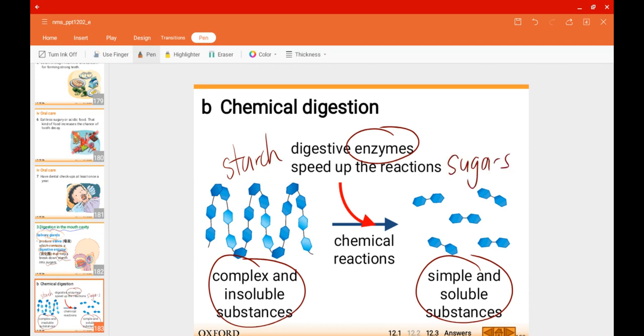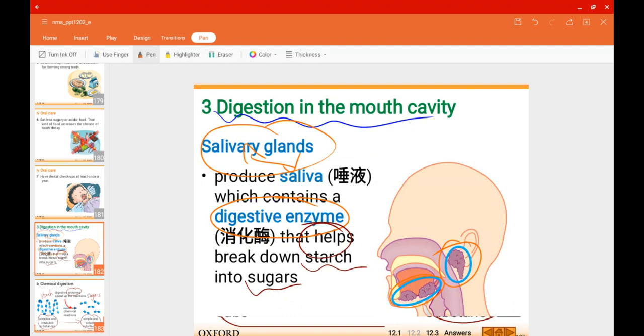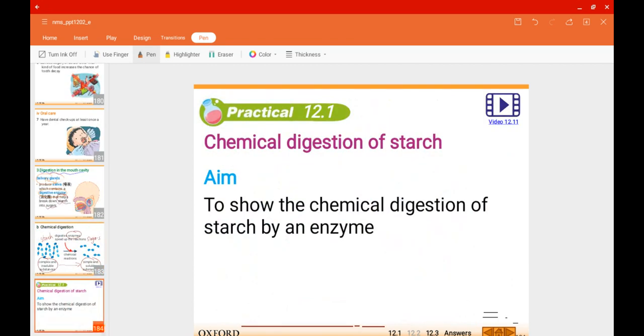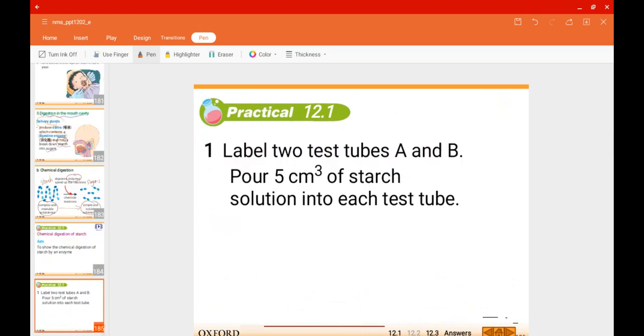From the more complex and insoluble substance to the simple and soluble substance with the help of digestive enzymes, which are present in saliva. So how exactly does this chemical digestion occur? Let's see this experiment.